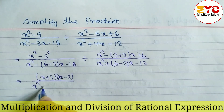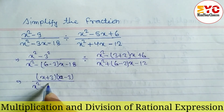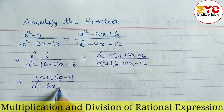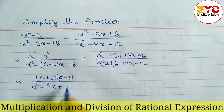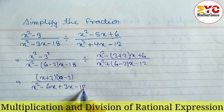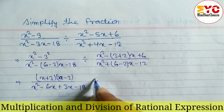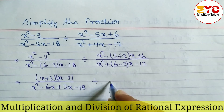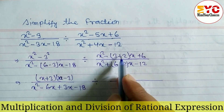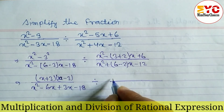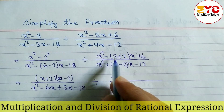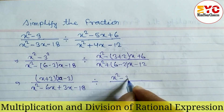Now we open the brackets. For the denominator: x squared minus 6x, and then minus plus 3x minus 18. Divided by the next part, opening the bracket gives x squared minus 3x, and then plus minus 2x plus 6.